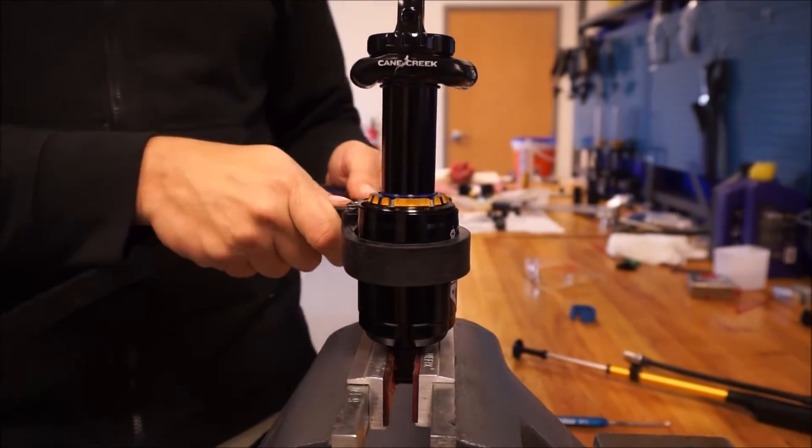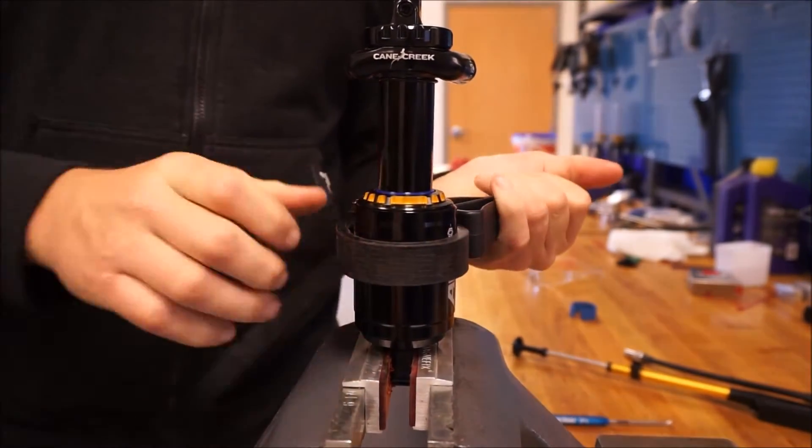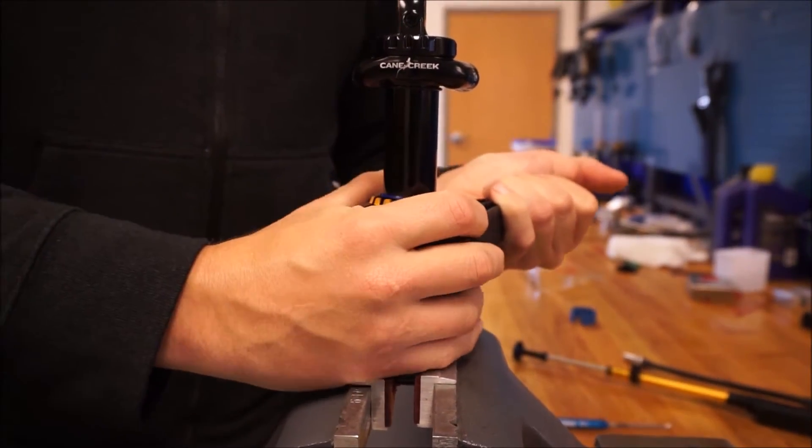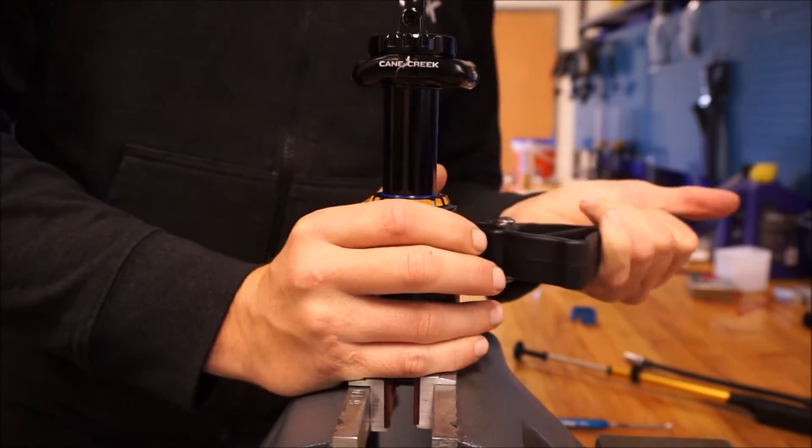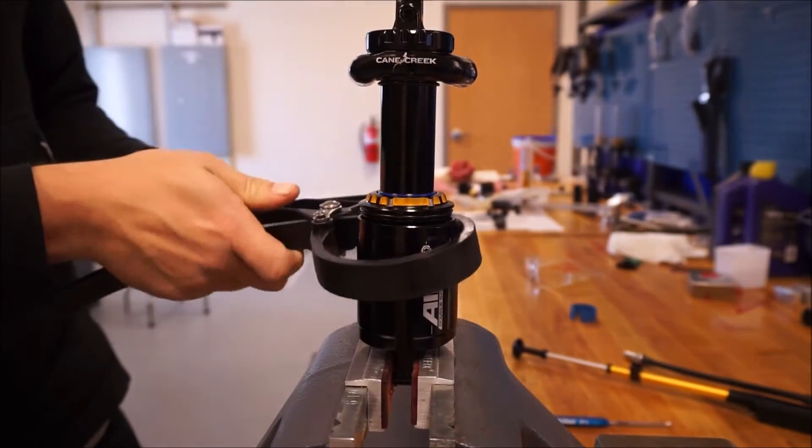Using a strap wrench, you want to slowly push down and twist on the can. That should free it up.